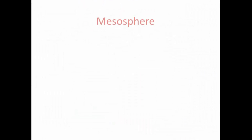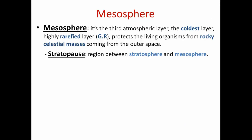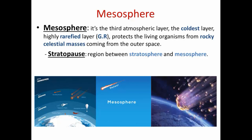The mesosphere reaches 0 degrees Celsius at its top and is the third atmospheric layer and the coldest one. It is a highly rarefied layer that contains small amounts of helium and hydrogen gas. It protects living organisms from rocky celestial masses coming from outer space, as meteors have friction force with the atmospheric layers, causing their burning in the mesosphere. Stratopause is the region between the stratosphere and mesosphere.